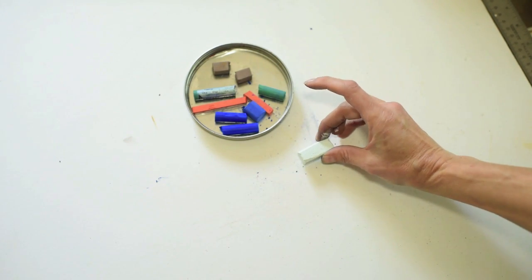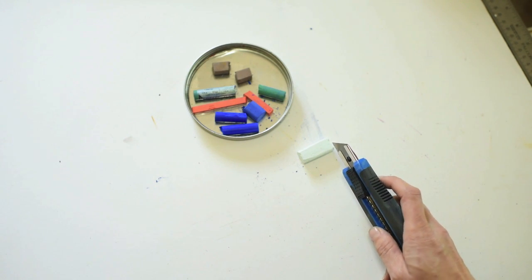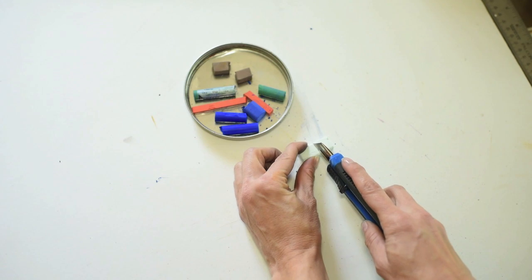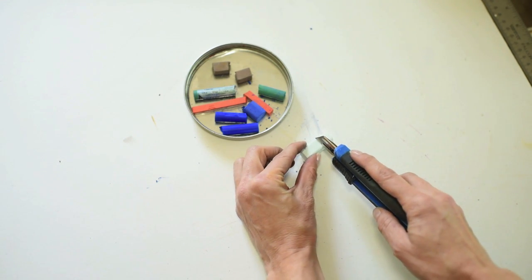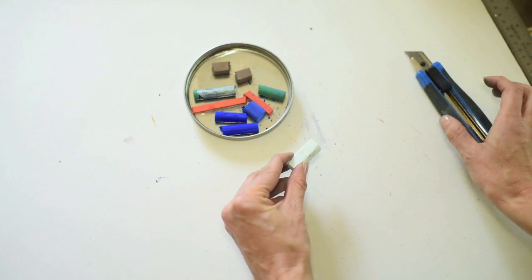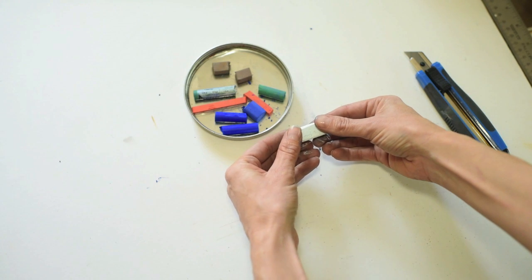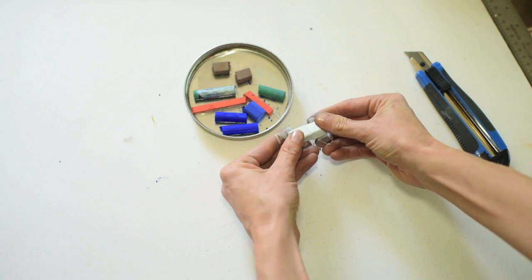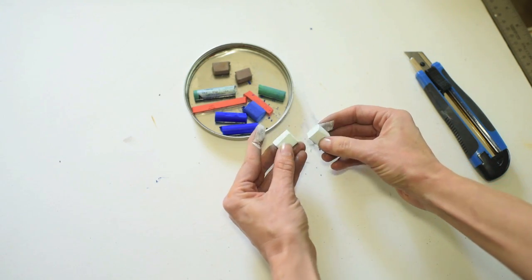Now I'm picking up a very soft pastel. It is important when you are scoring the pastel to use a very light touch because this can easily crumble if you're not very careful. I like to score this brand on two different sides and very carefully, using gentle pressure, break it apart.